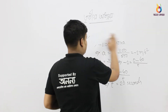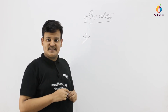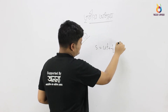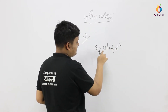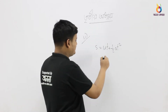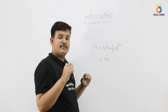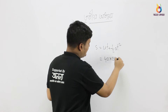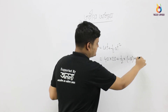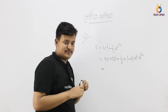Now I will solve for distance S. S is equal to ut plus half of a t squared. The u value is 144 km per hour, which is 40 meters per second. t is 20 seconds. So S equals 40 into 20, plus half into minus 2 into 20 squared. That gives 800 minus 400 equals 400 meters.